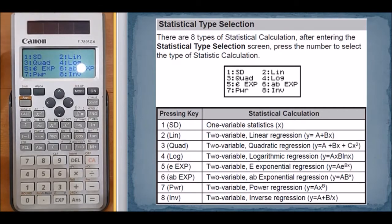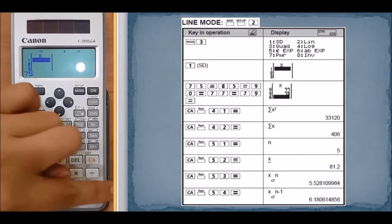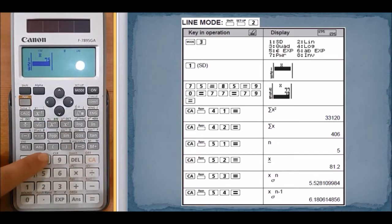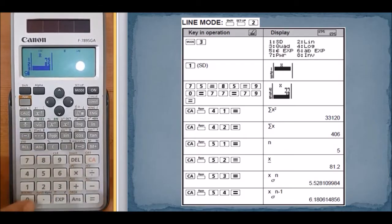Now let's see example one. We press one for SD. Enter the numbers: 75 equals, 85 equals, 90 equals.